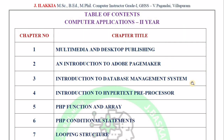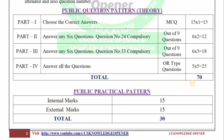For the practical, you will get 30 marks. How are these marks split? Internal and external. In the internal, there are 15 marks: 5 marks is the Record Mark, and the remaining 10 marks cover attendance and class test.